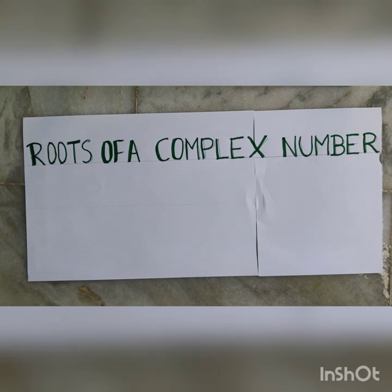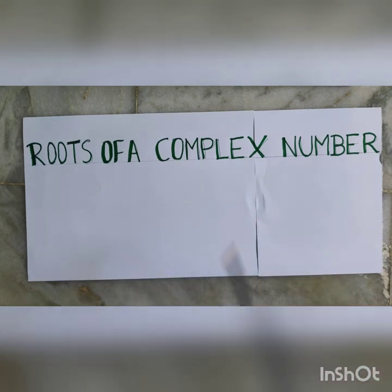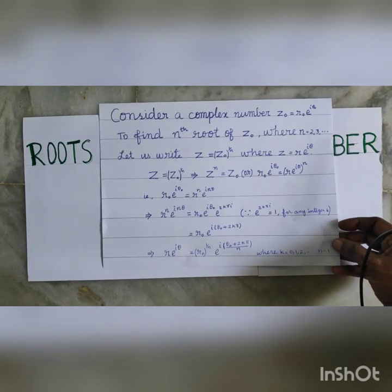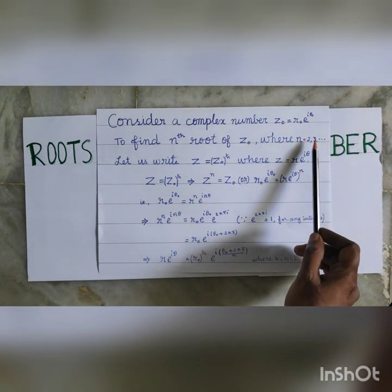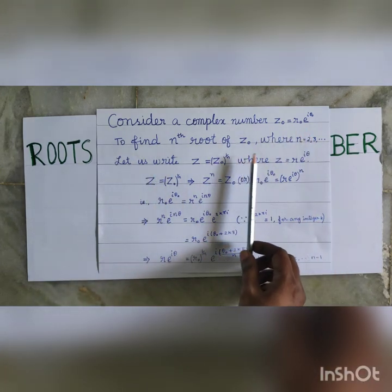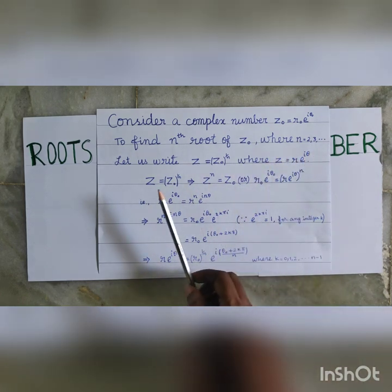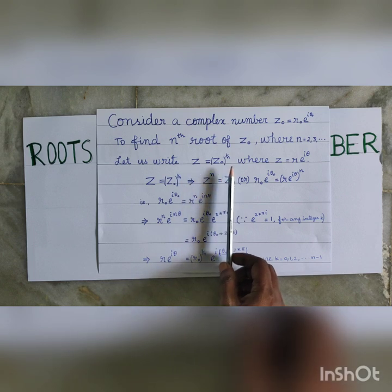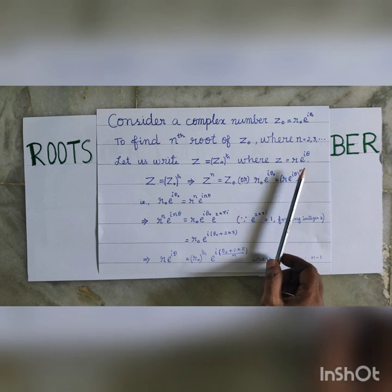We are going to find roots of a complex number. Consider a complex number Z0 equal to R0 into e power i theta 0. To find the nth root of Z0, where n equal to 2, 3, etc. Let us write Z equal to Z0 power 1 by n, where Z equal to R into e power i theta.